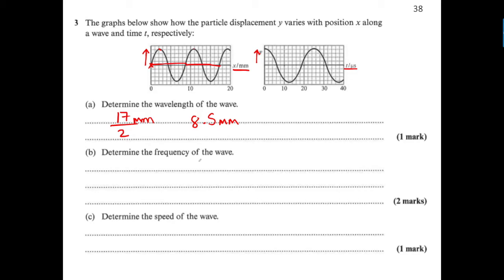For frequency, you use time because frequency equals one over the time period. The time period is the time for one complete oscillation. If I measure that distance, it's 25 microseconds. So f = 1/(25 × 10⁻⁶). When I put that into my calculator, I get 40,000 Hz.